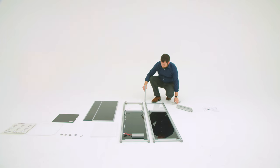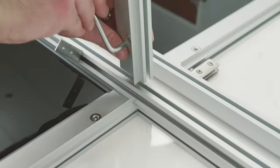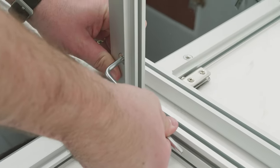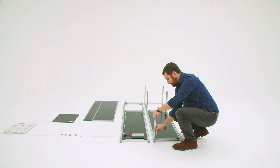First, place the frame module, part A, onto a flat surface. Then insert the aluminum bars into the grooves on both sides. Tighten the screws with the wrench provided.